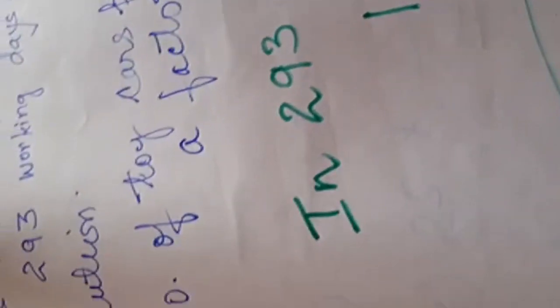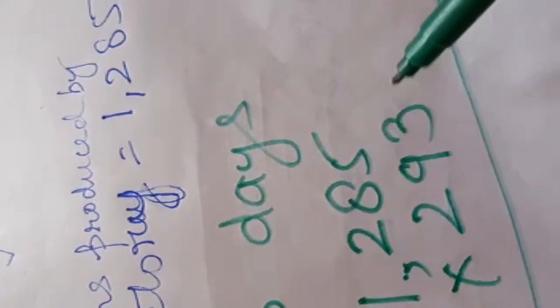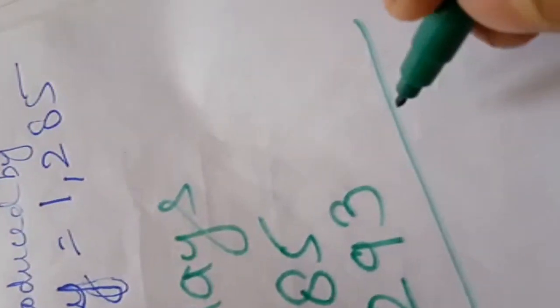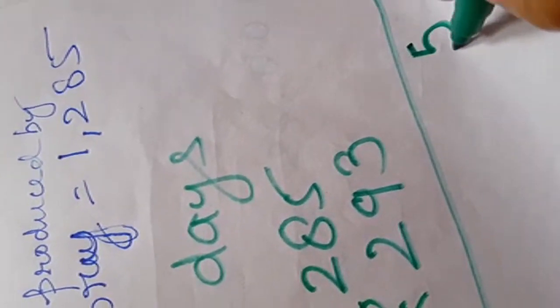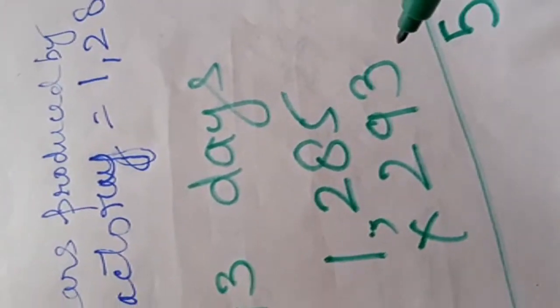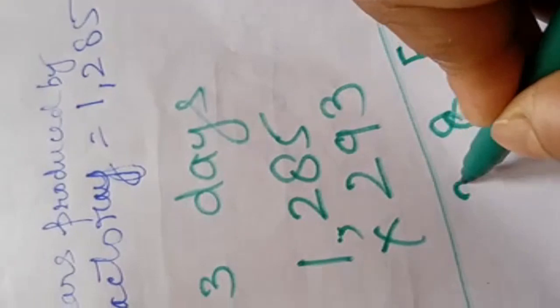So, here I will start from 3 ones. 3 times 5 is 15, 3 times 8 is 24 plus 1 is 25, carry over 2. 3 times 2 is 6 plus 2 is 8. 3 times 1 is 3.